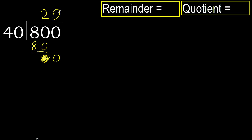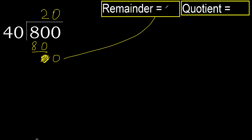Always complete with 0. Complete because here we finish with this number. Therefore 800 divided by 40 is 20.